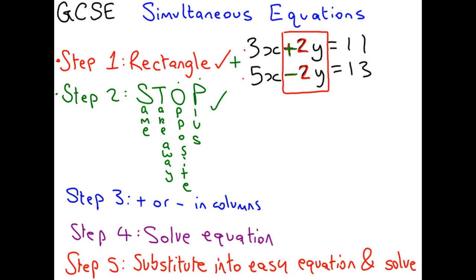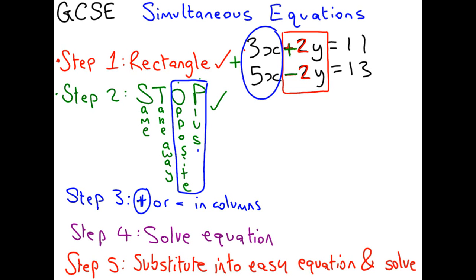Step 3: we have to add or take away depending on what we did in step 2, and in our case we're doing the plus, so we add in columns. Look at the first column with the 3x and the 5x — add them: 3x add 5x is 8x. Look inside the rectangle: you've got plus 2y and minus 2y. If you've got 2y and you take away 2y, you've got nothing left — they've disappeared. That's why it's called the elimination method. And then at the end, our numbers add nicely together: 11 and 13 gives us 24.